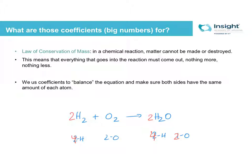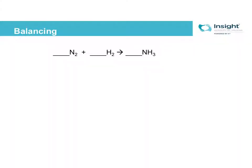That was probably way too fast for everything to sink in, but that's the idea behind balancing — you are going to count how many of each atom are present in the reactants and how many are present in the products, and then you're going to add coefficients until those numbers are equal. The way I like to do this, and I highly recommend until you get really comfortable with this, is taking the time to write these charts up.